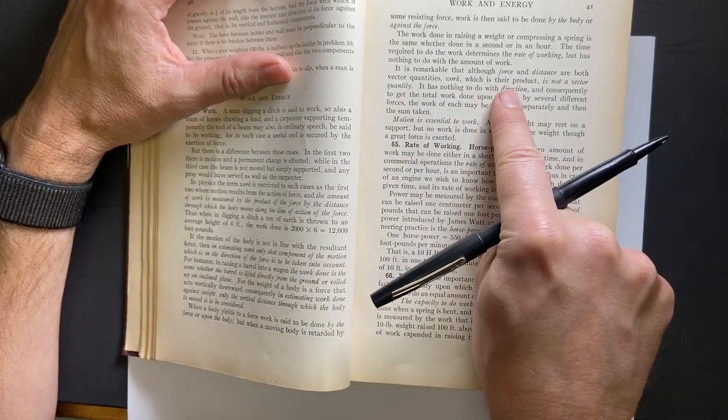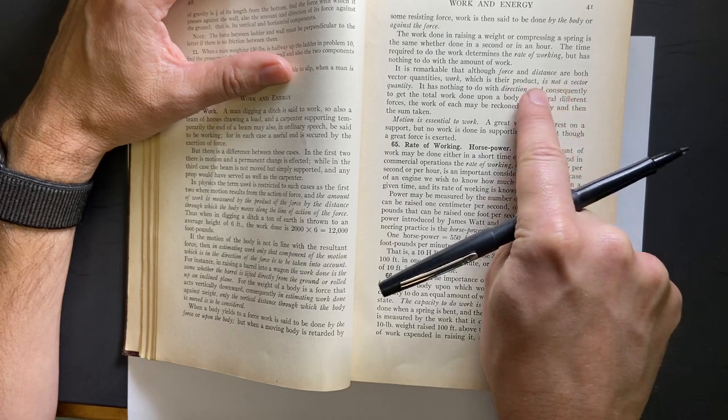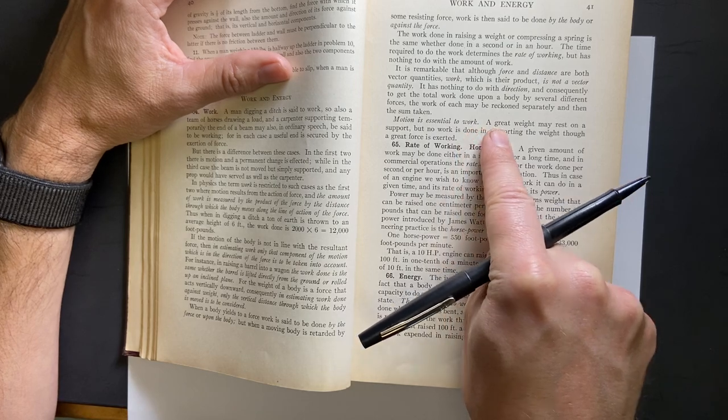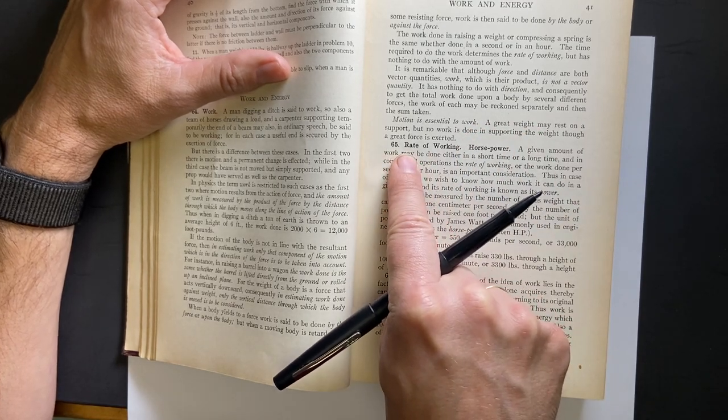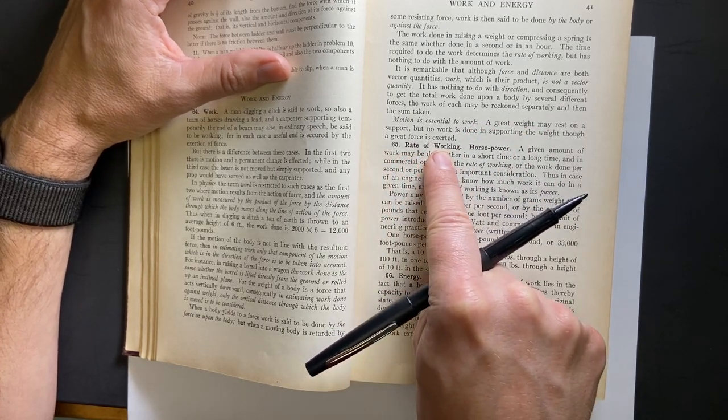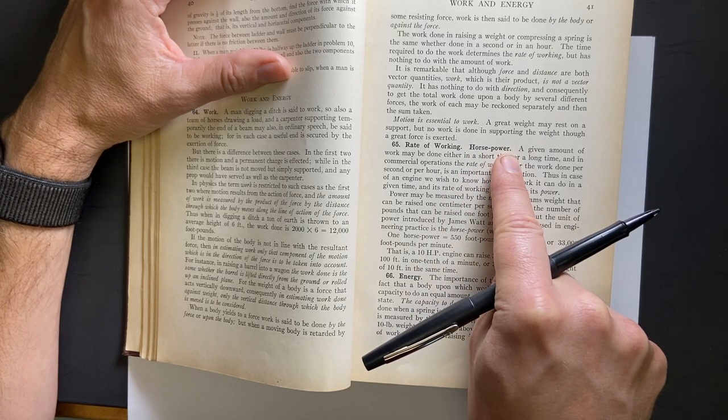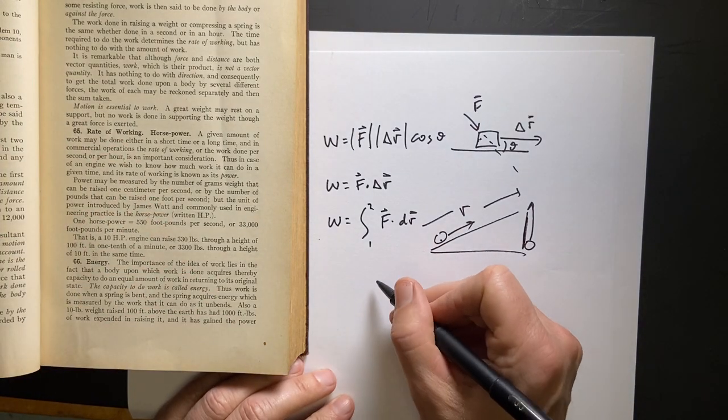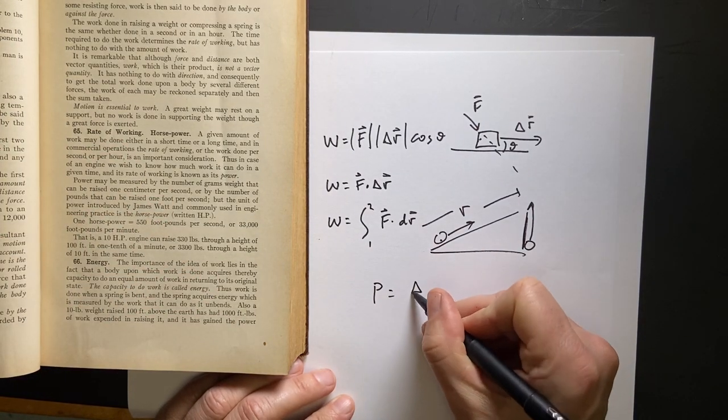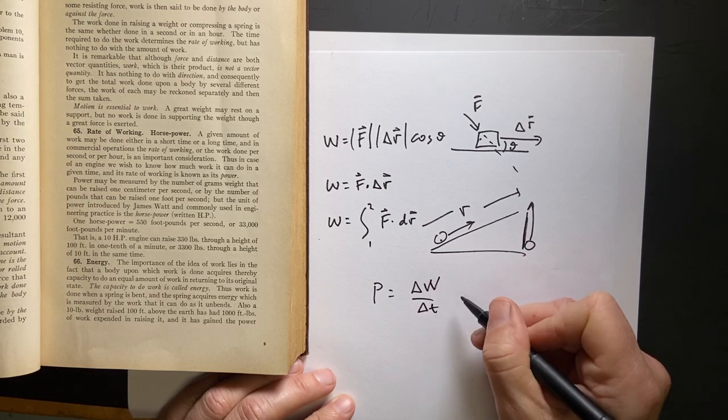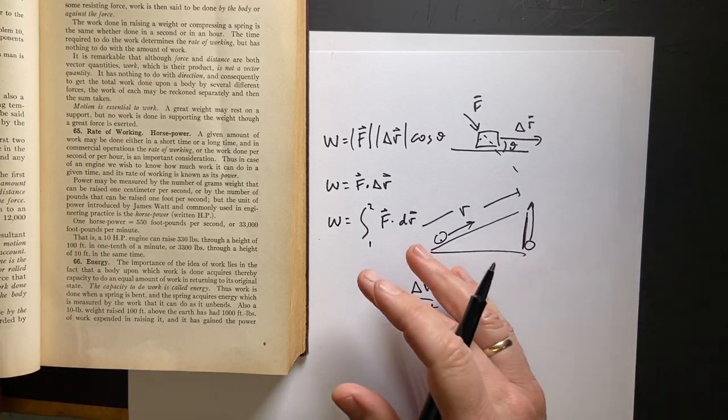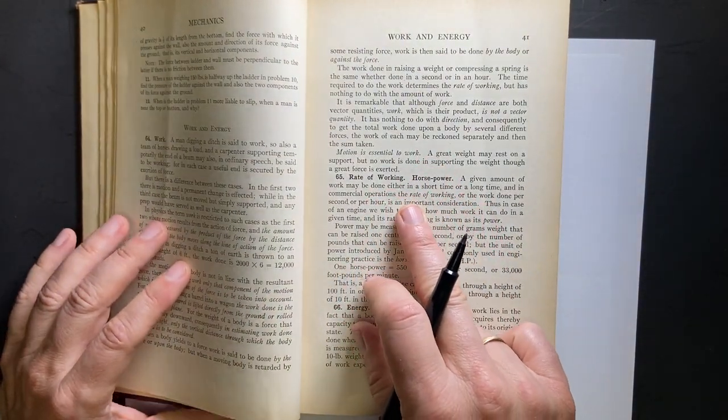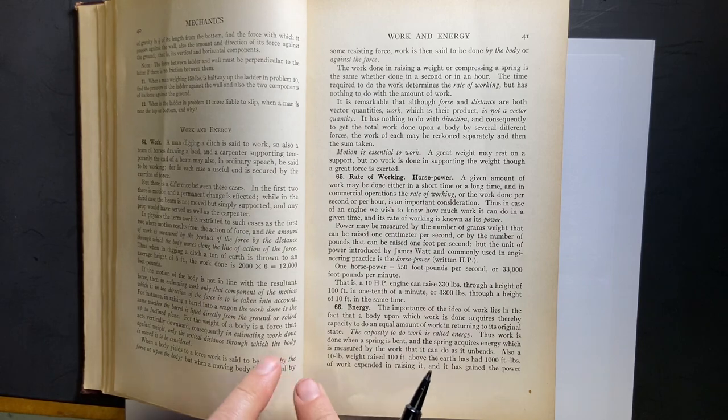It's remarkable that although force and distance are both vector, they do have vector quantities. Work is their product, which is not a vector quantity. Motion is essential to work. You have to have a displacement. And then they come down here to rate of working or horsepower. So they're just talking about power. So normally we would say power is the rate of change of work over time or energy. But they didn't make that connection between work and energy yet. It's kind of weird that they'd get into power before getting into energy.